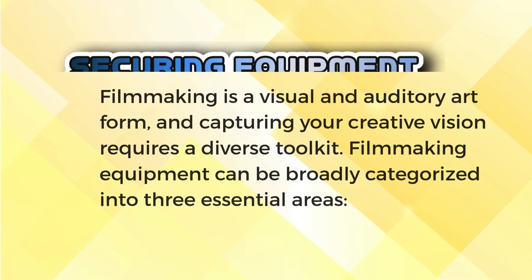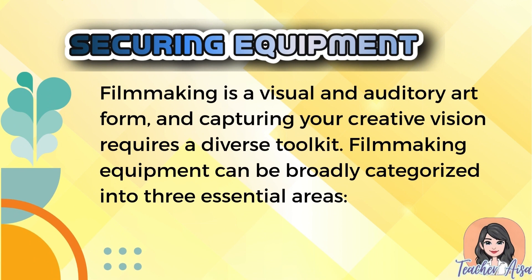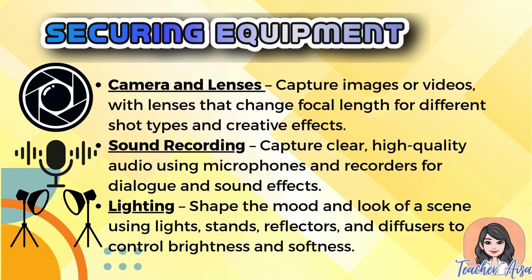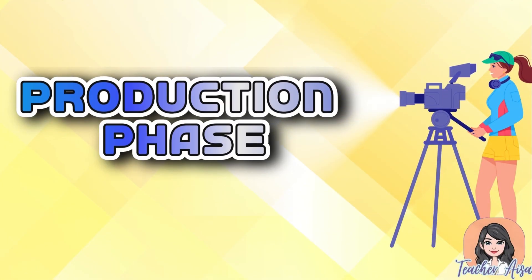Securing equipment involves preparing all the essential tools for filming. Filmmaking equipment falls into three essential areas: cameras and lenses, which capture images or videos with various shot types and creative effects; sound equipment like microphones and recorders, which ensure clear, high-quality dialogue and sound effects; and lighting tools including lights, stands, reflectors, and diffusers, which help create the desired mood.